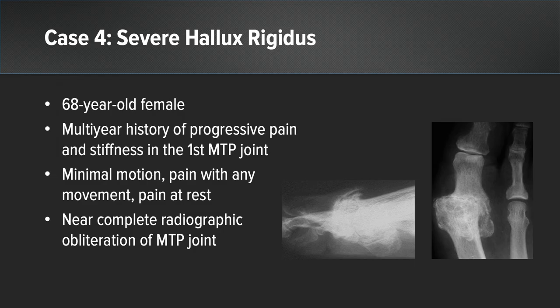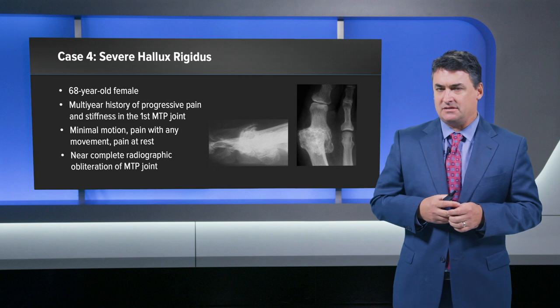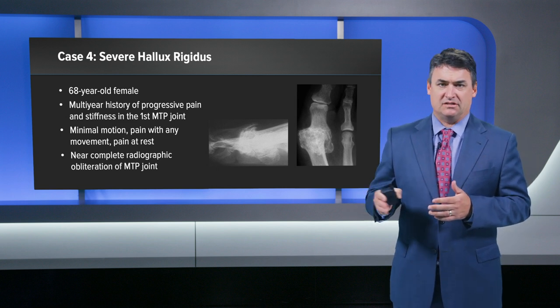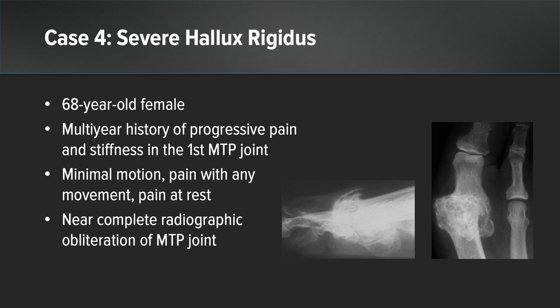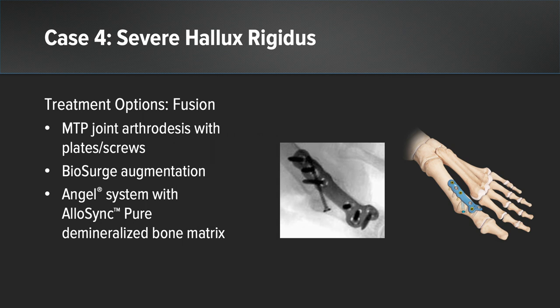Case four is a 68-year-old female with a multiple-year history of progressive pain and stiffness in the first MTP joint, minimal motion, pain with any movement, and pain at rest. When patients have pain at rest, I'm more inclined to perform arthrodesis. X-rays show near complete radiographic obliteration and destruction of the first MTP joint. She would be best served with MTP joint arthrodesis with plates and screws, Biosurge augmentation to increase fusion chances, and the Angel system or Alex Inc. Pure for the arthrodesis procedure.